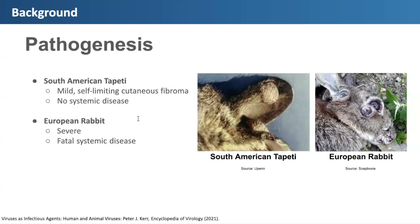In contrast, myxoma virus causes a severe and fatal systemic disease in European rabbits. In the image here, you can see the awful symptoms it causes in European rabbits — open, bloody lesions across the body, including under the eye and ear.